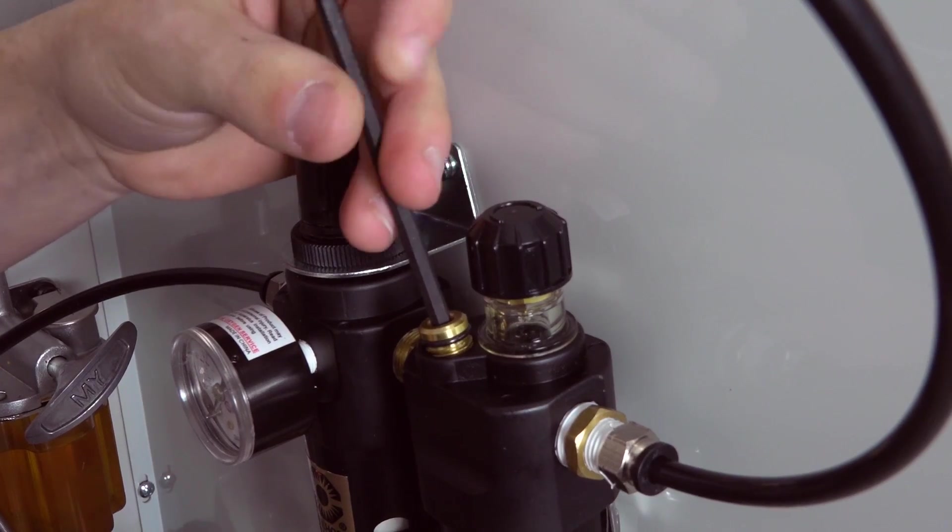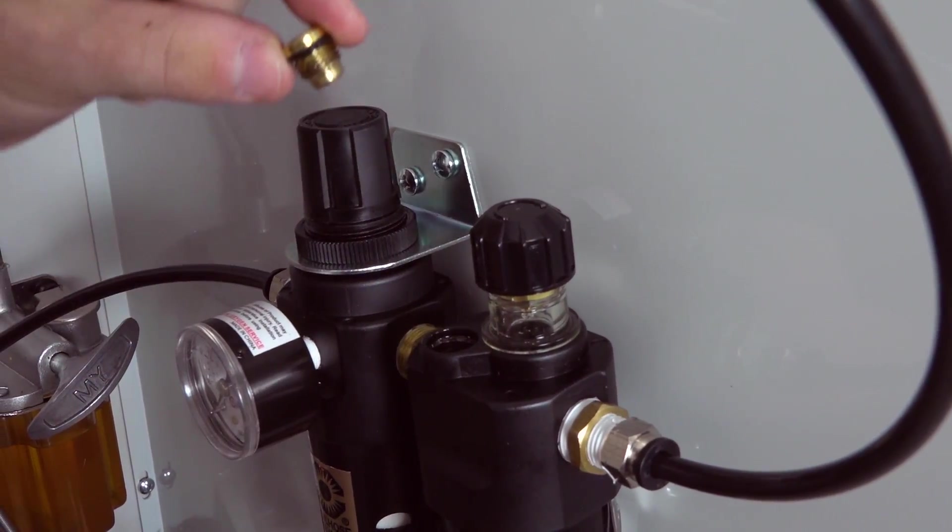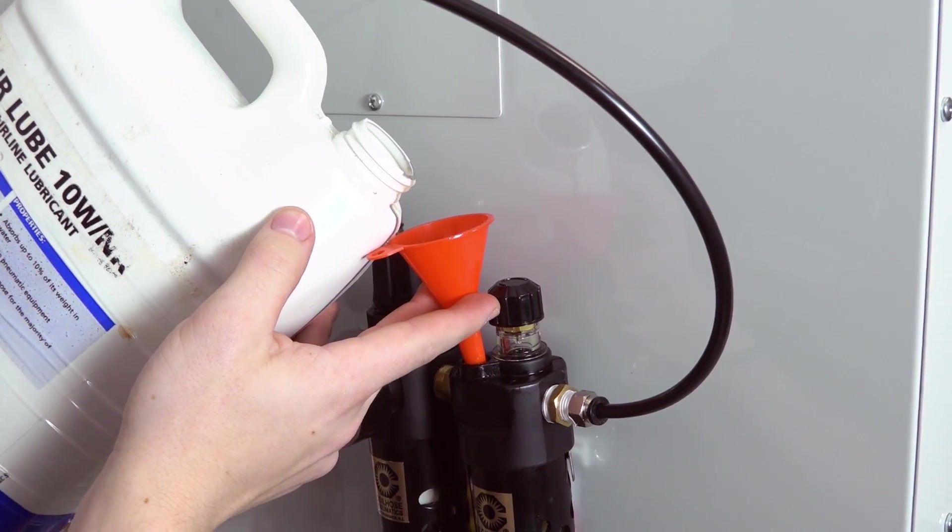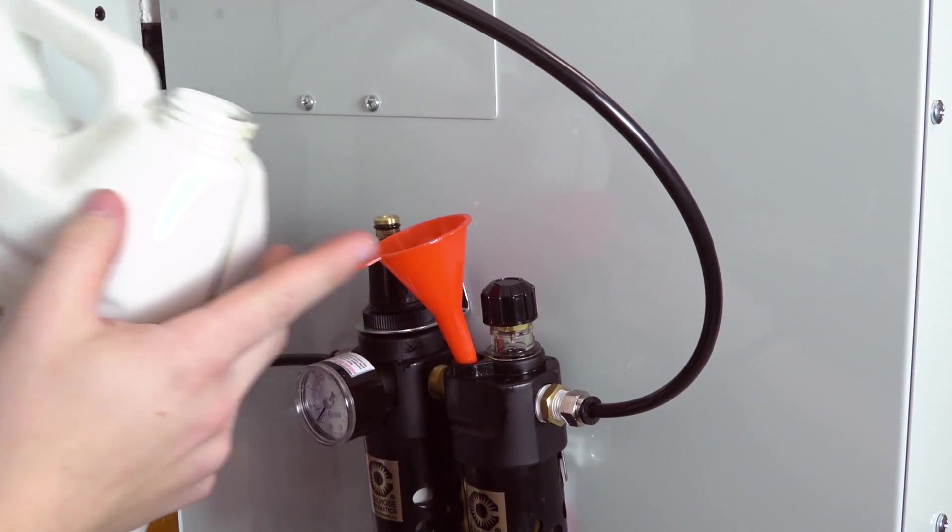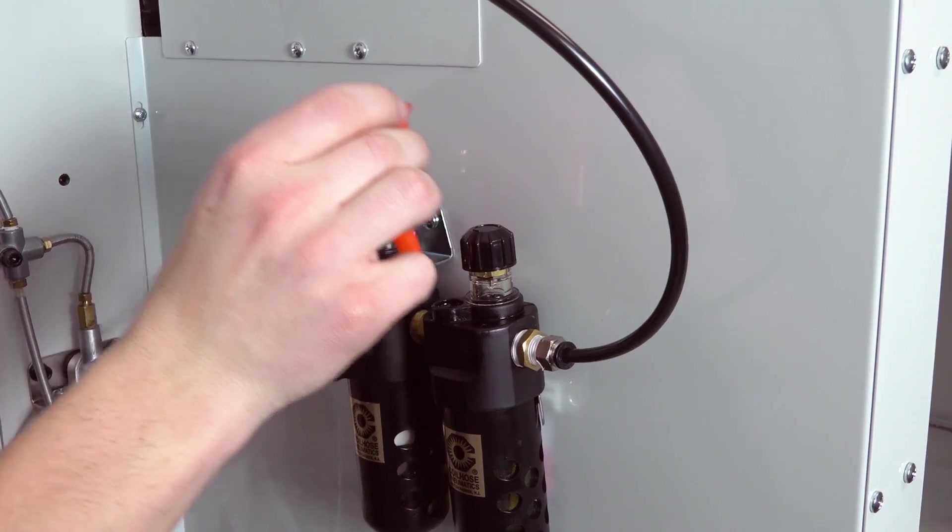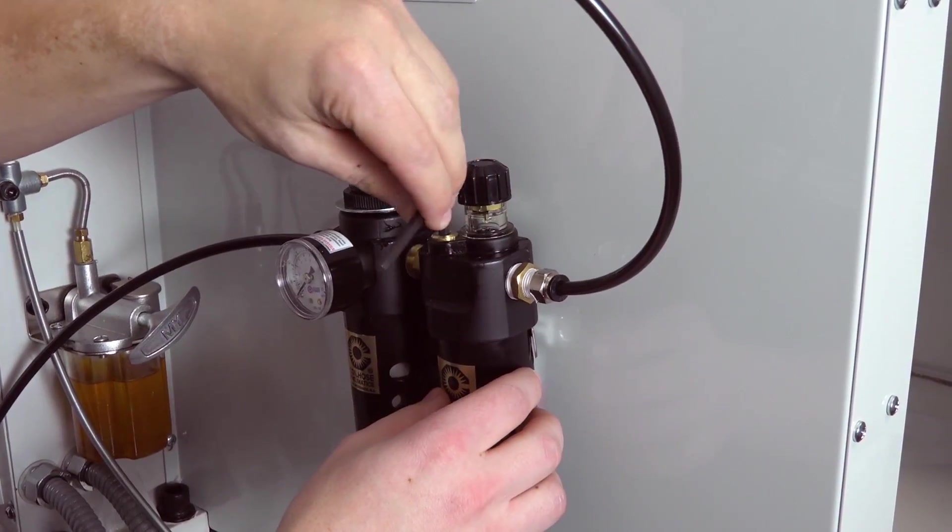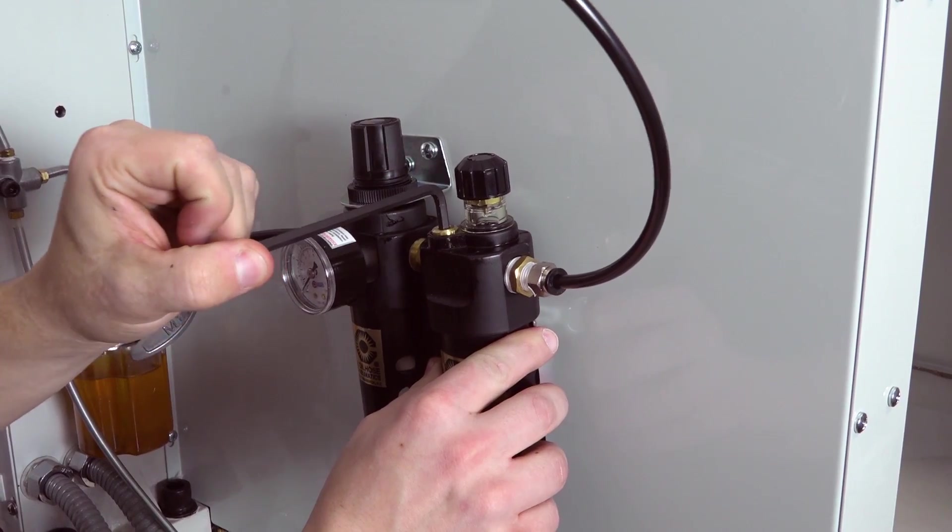Remove the cap of the FRL fill port with a hex key. Use a small funnel to fill the lubricator bowl with standard air tool oil. Only use oil that is specifically designed for air tools. Reinstall the fill port cap.